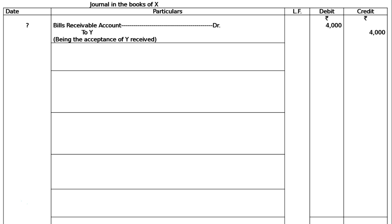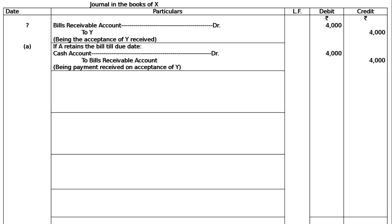Case 1: If X retains the bill till due date. The entry is cash account debited to bills receivable account, being payment received on acceptance of Y — Rs. 4000 each in the debit and credit columns.